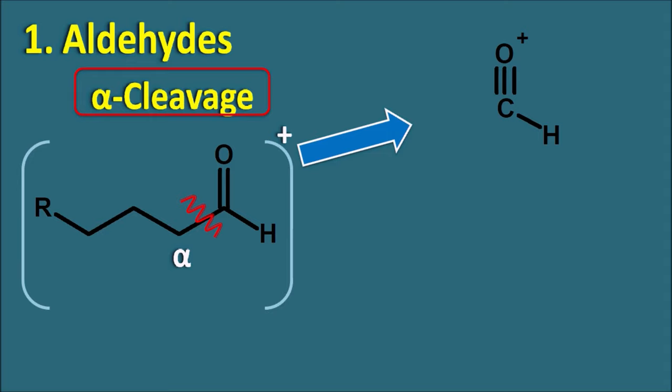For the fragment ion from alpha cleavage: one oxygen (mass 16), one carbon (mass 12), and one hydrogen (mass 1). So 16 plus 12 plus 1 gives an m/z value of 29. A peak at 29 in the aldehydes may indicate it is due to alpha cleavage.